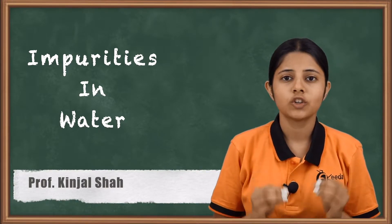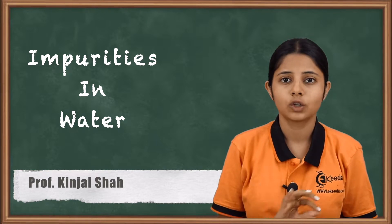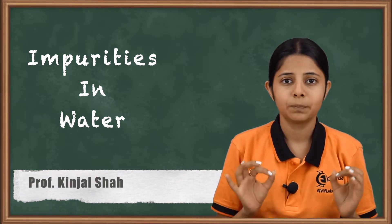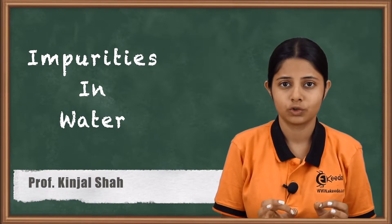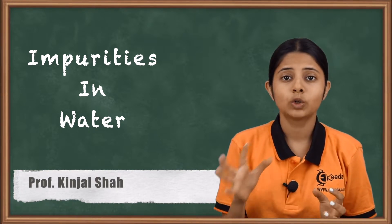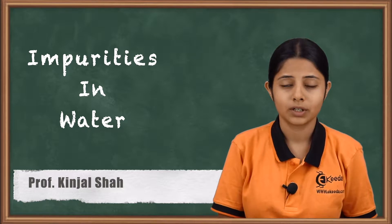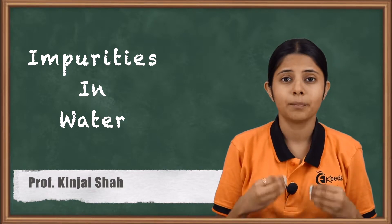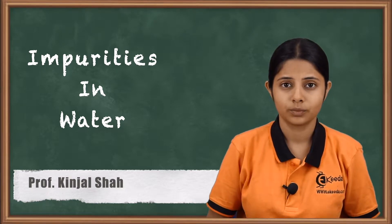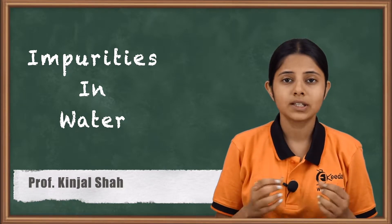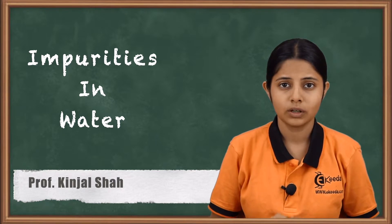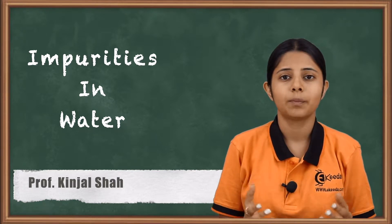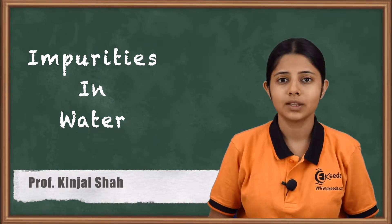Water generally is considered to be pure and the pH is considered to be 7, i.e. neutral. But due to certain impurities, there are certain impacts on water. Today we will study what all the impurities are present in the water and what are the impacts of it in this session.